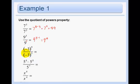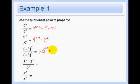In this next one, the base is negative 3 and it's in parentheses, so we must keep it in parentheses. We will do 9 minus 3, and so we get negative 3 to the 6th power.